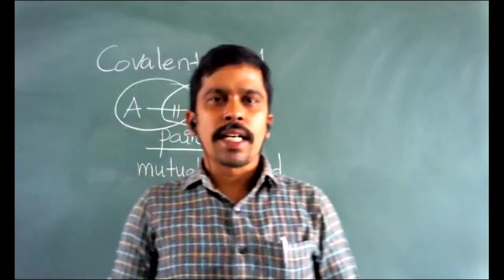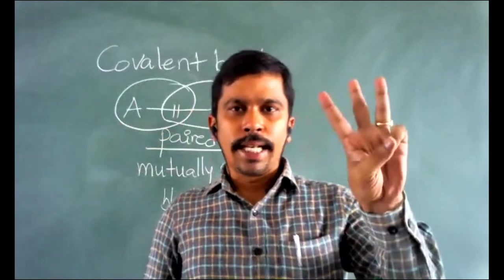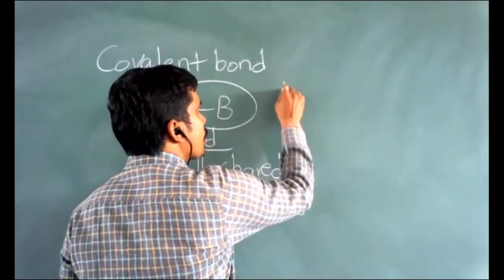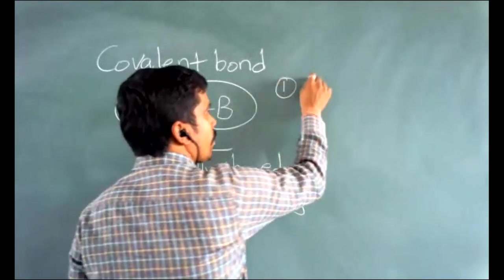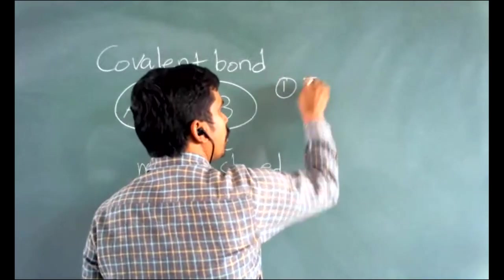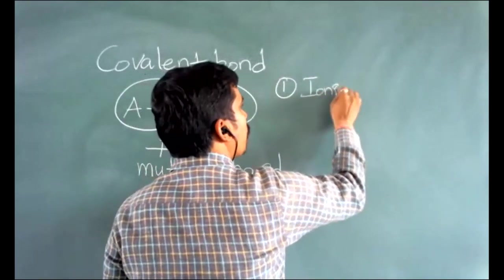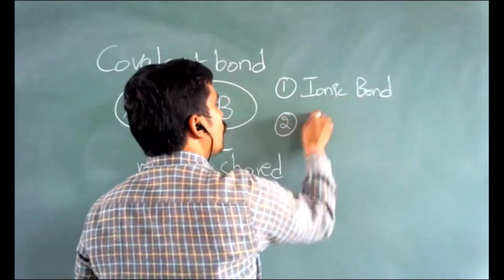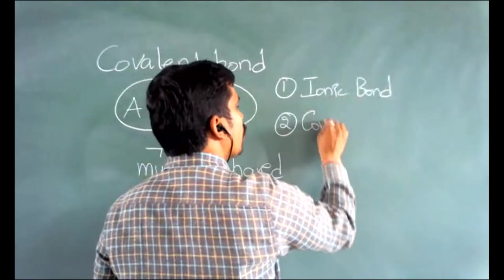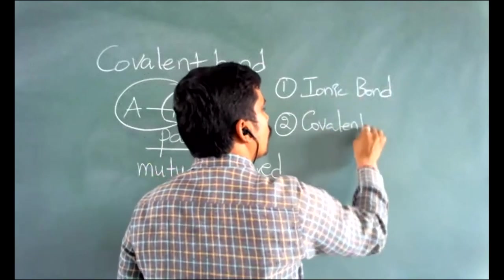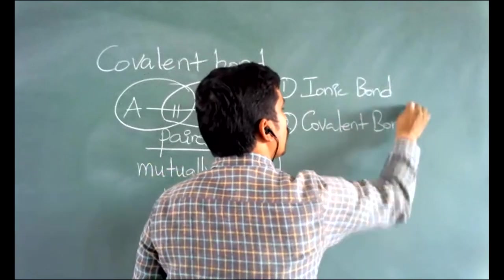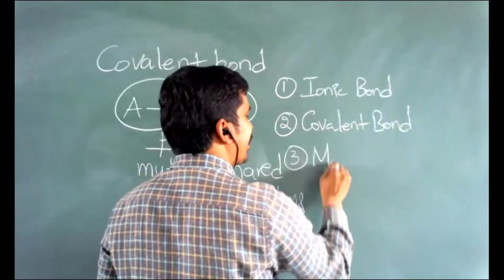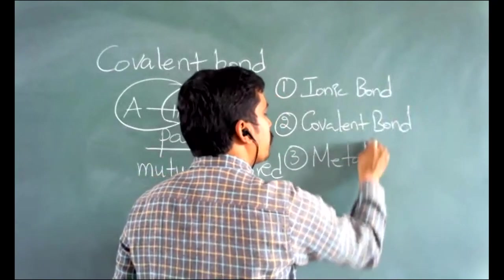Chemical bonds are classified into three types: ionic bond, covalent bond, and coordinate bond. Ionic bond is the first type, covalent bond is the second, and coordinate bond is the third. Another type is also the metallic bond.